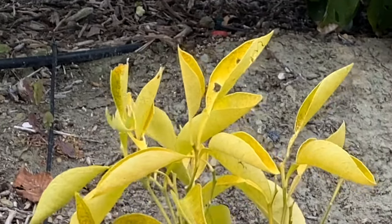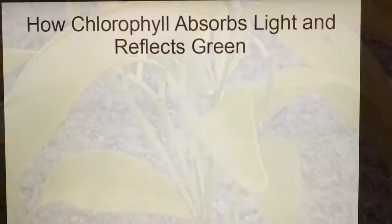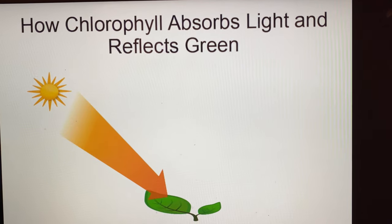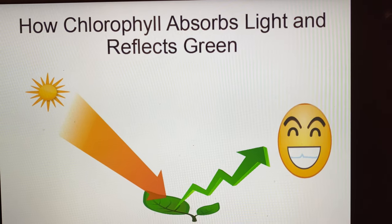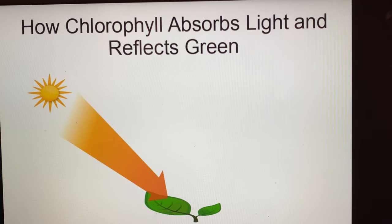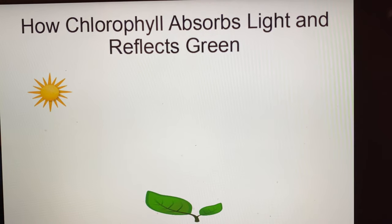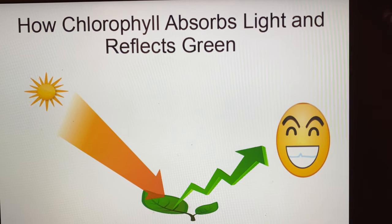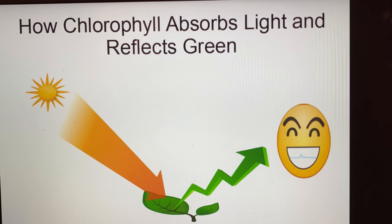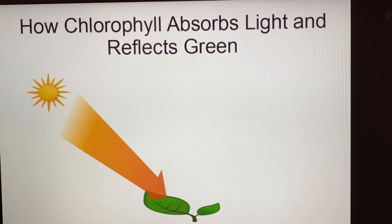First, we must know why the leaves turn yellow. The reason for the green color is that the leaves contain a substance called chlorophyll. Chlorophyll absorbs sunlight other than green light, and reflects green light, so one can see green leaves. When there is less chlorophyll, the leaves become less green, or yellow.